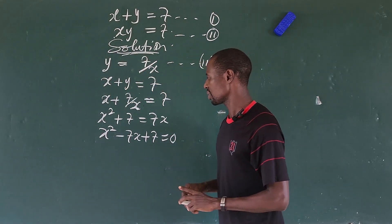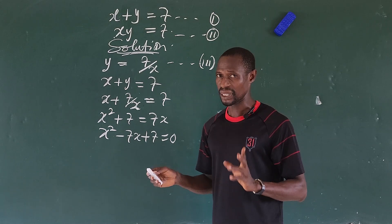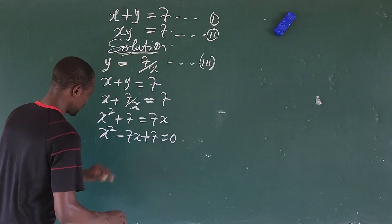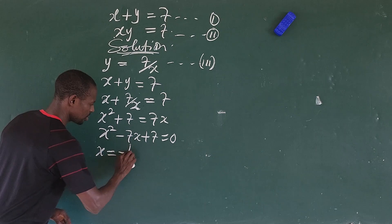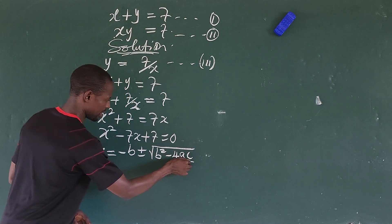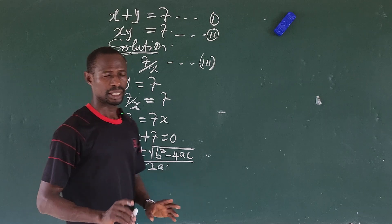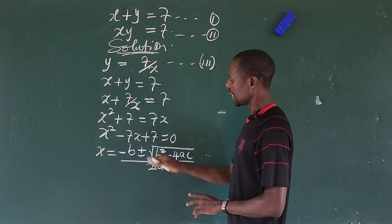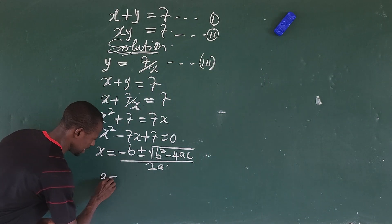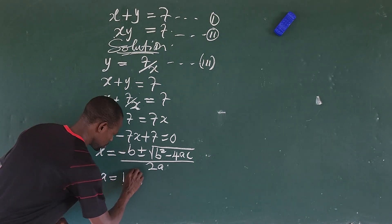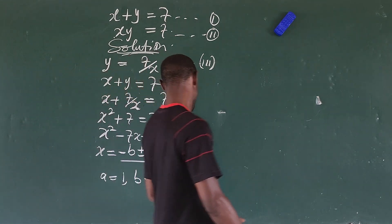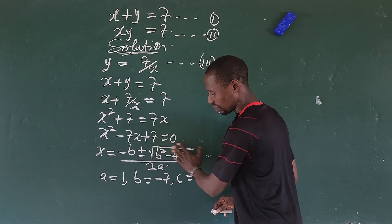This is a quadratic equation and we cannot use the factorization method, so the best way is to use the quadratic formula. From the equation x² − 7x + 7 = 0, we identify: a = 1, b = −7, and c = 7.